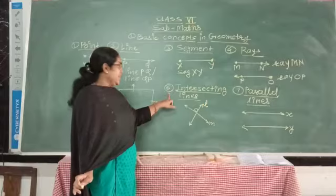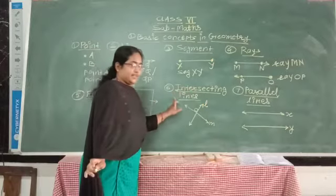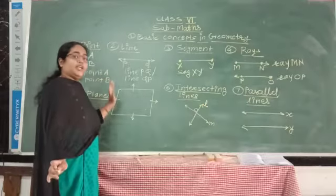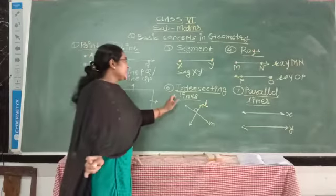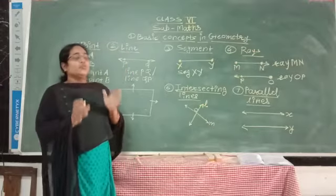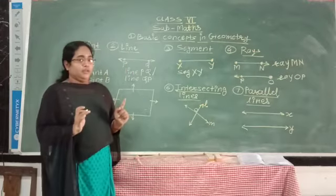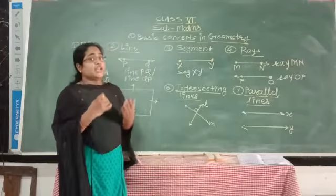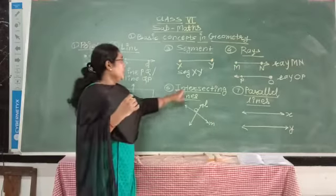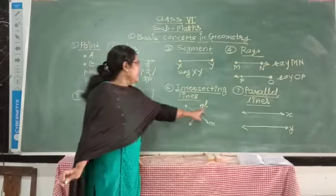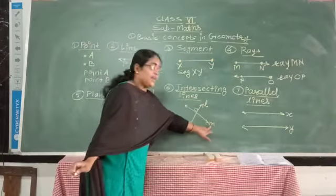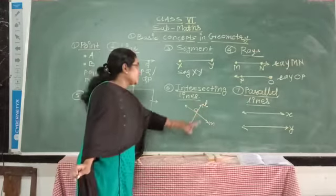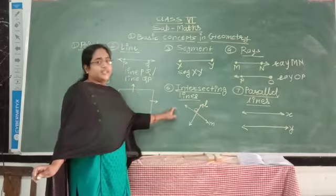The sixth basic concept is intersecting lines. Intersecting lines are lines which lie in the same plane but cross or intersect each other. For example, line L and line F intersect at point O, so these two lines are called intersecting lines.